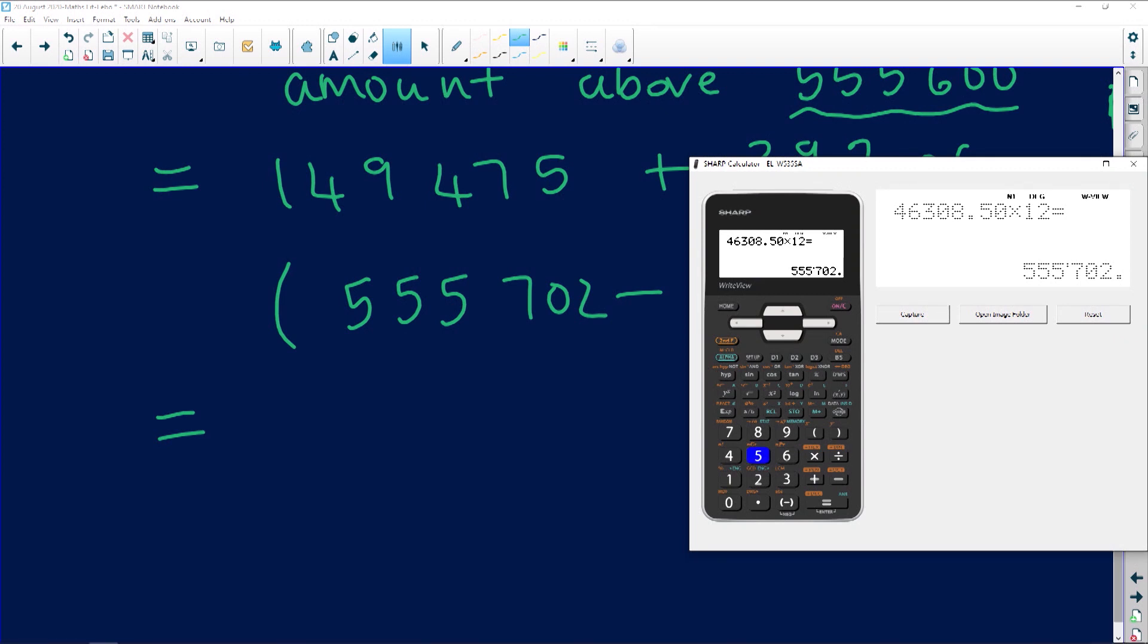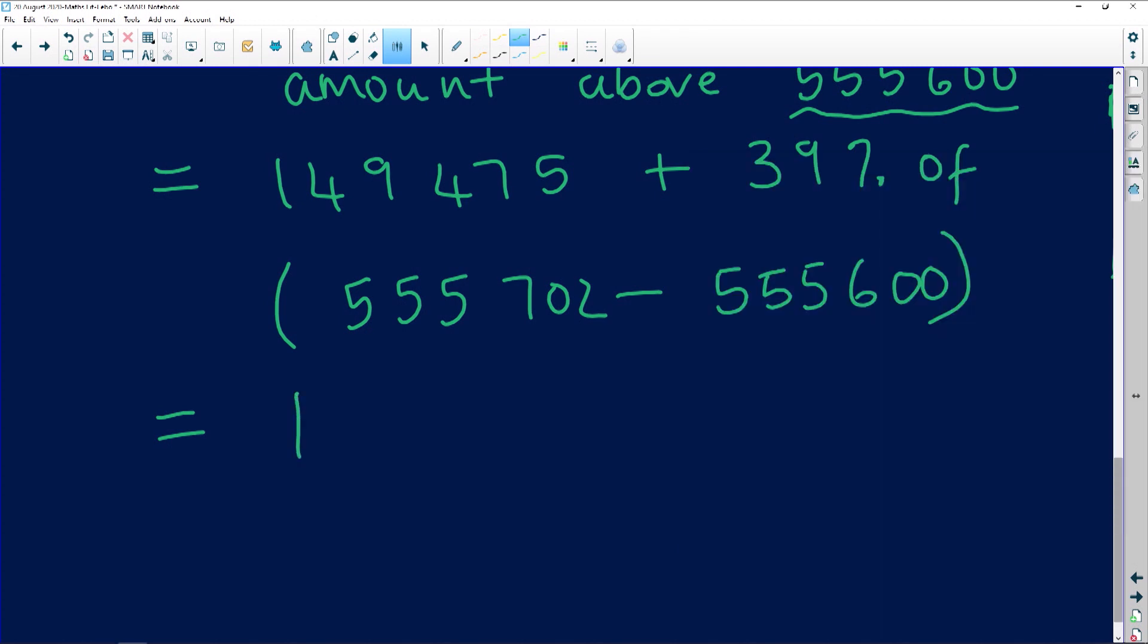Calculator. R149,475 plus 39%, so what I want to do shift percent point of... oh I used the wrong formula. Okay, I'll write it exactly as it is and just show you guys what you need to do for yourself.